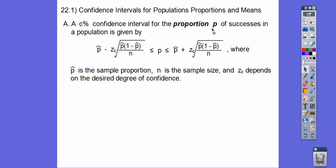P is your population proportion. Usually we don't know what that is, so we know how to calculate a sample proportion. N is our sample size. And our Z score, our Z sub C for our confidence interval, depends on your desired degree of confidence.